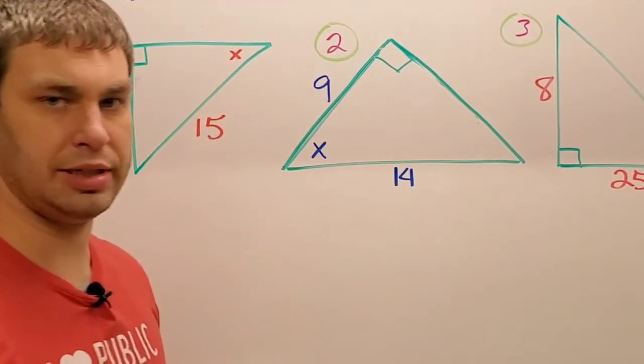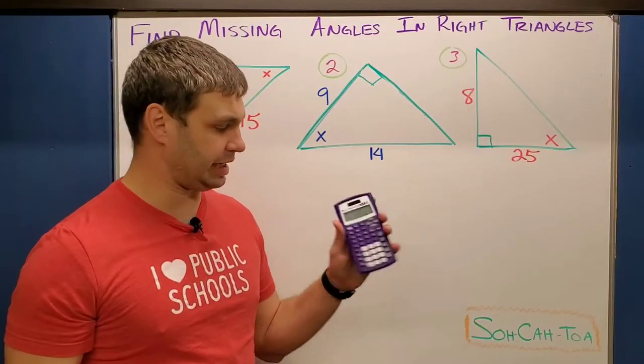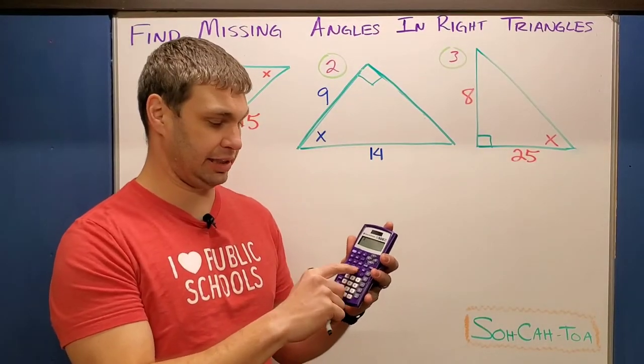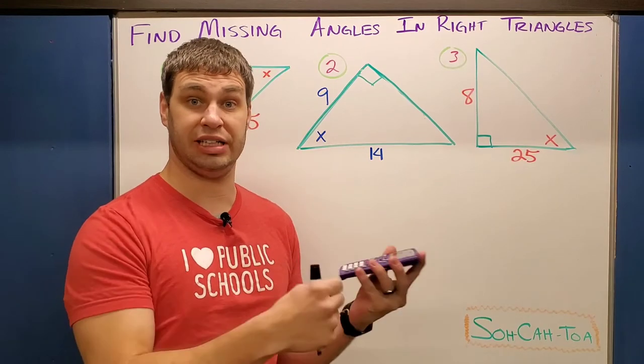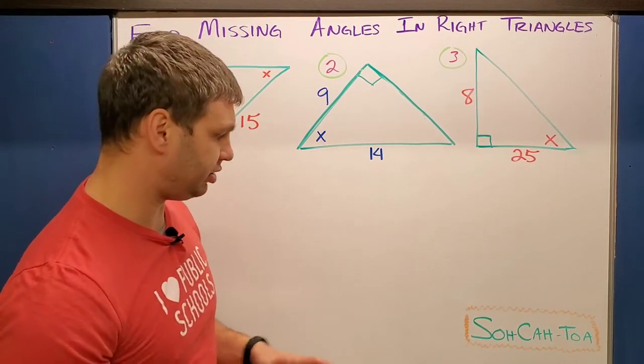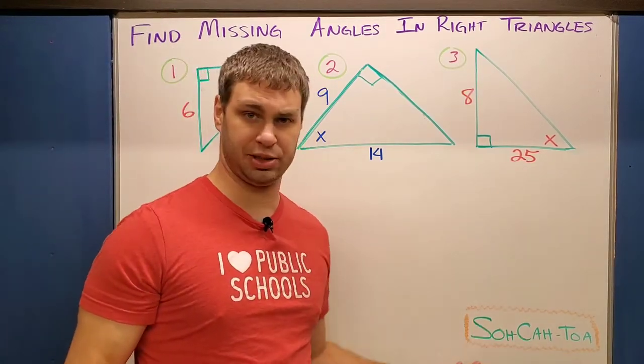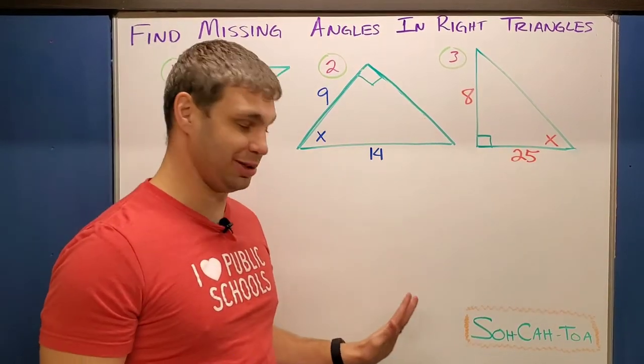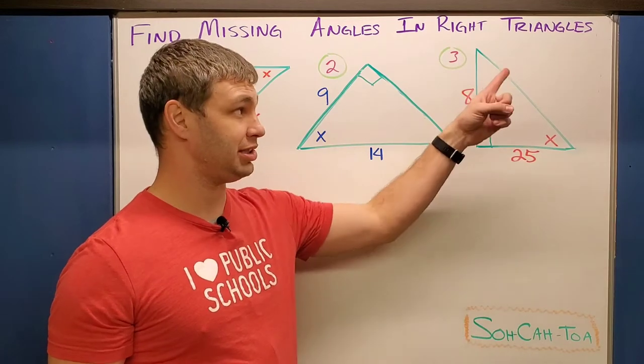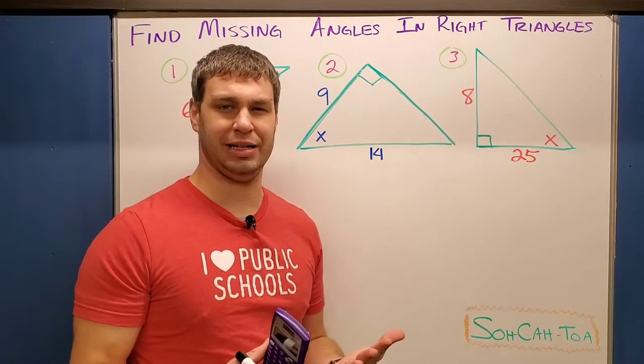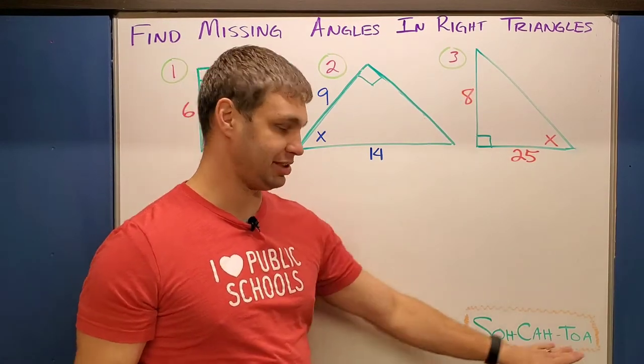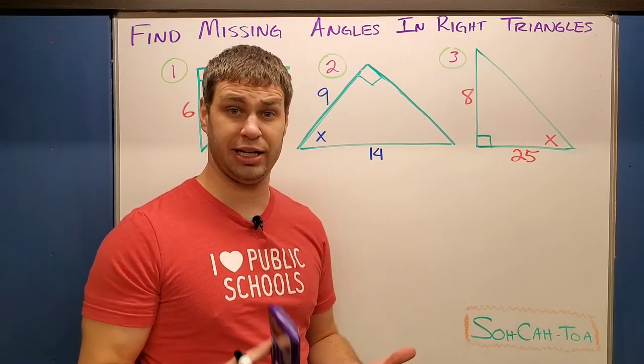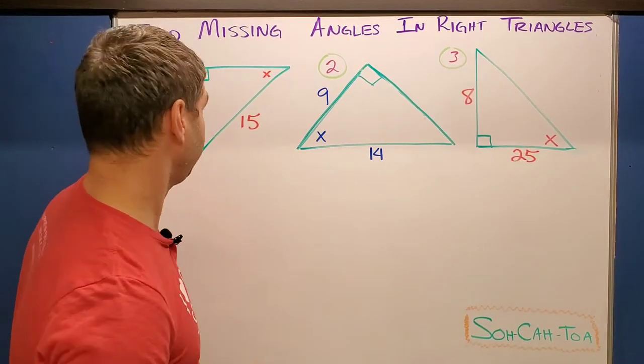Before we do number one, a couple of things you're going to need: a calculator that has sine, cosine, and tangent and can do inverse sine, inverse cosine, and inverse tangent, as well as you need to know what SOHCAHTOA means - that special word we use with trig ratios. If you have no idea what SOHCAHTOA means, you might want to watch this video up here where I explain that word and how it corresponds with sine, cosine, and tangent. We can use those trig ratios to help us solve some of these right triangles.